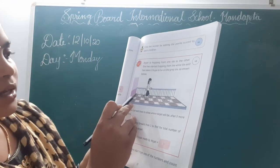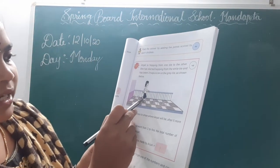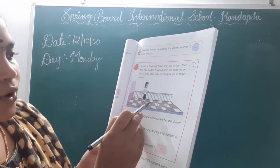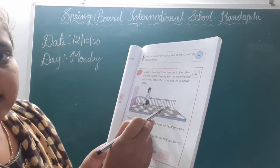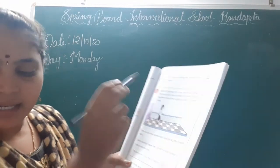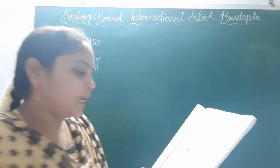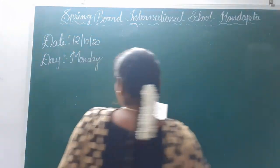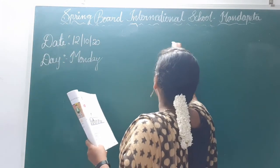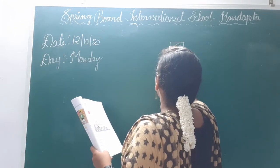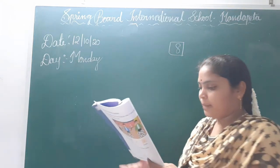Everyone count: 1, 2, 3, 4, 5, 6, 7, 8. Totally the number of hops made by Anjali is 8 hops. You have to write the number in the blank.